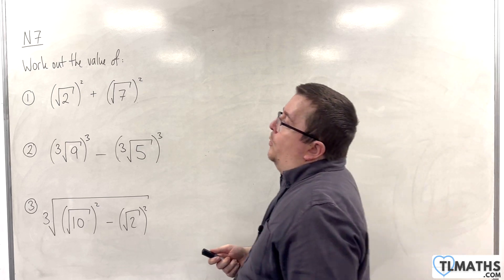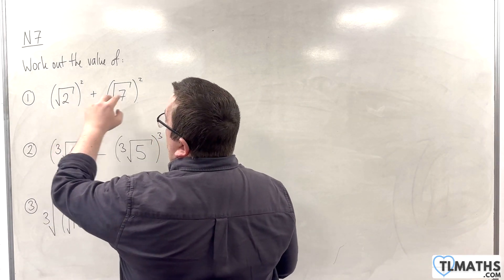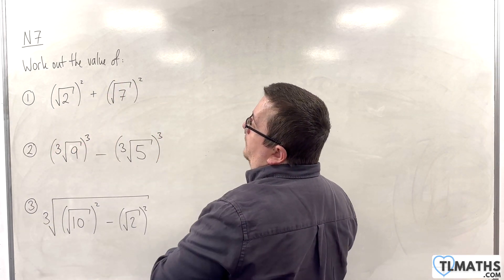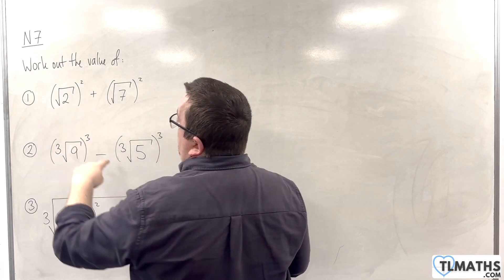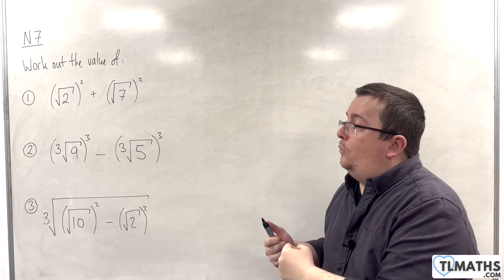For our first example, we have root 2 all squared plus root 7 all squared. Now, we need to understand that square rooting and squaring are inverse processes of one another.